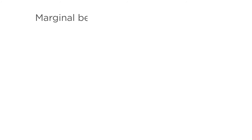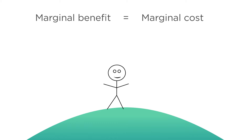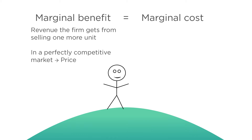Given these constraints on what the firm can do in the short run, how does it maximize profits in the short run in a perfectly competitive market? The answer shouldn't come as much of a surprise. The firm chooses a quantity of goods to produce that sets marginal benefit equal to marginal cost — it's back to climbing that same hill. In this case, the marginal benefit is the revenue the firm gets from selling one more unit. In a perfectly competitive market, this is simply the price of the good.